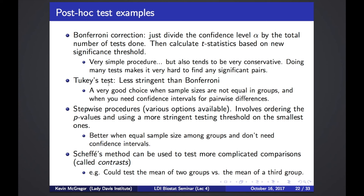Another post hoc test is Tukey's test, which is less stringent than Bonferroni. It's a good choice when sample sizes are unequal between groups and when you need confidence intervals for pairwise differences. There are also stepwise procedures where you order all p-values from smallest to largest, using a very strict threshold on the smallest p-values and a less strict threshold on larger ones — better when sample sizes are equal but you don't need confidence intervals.